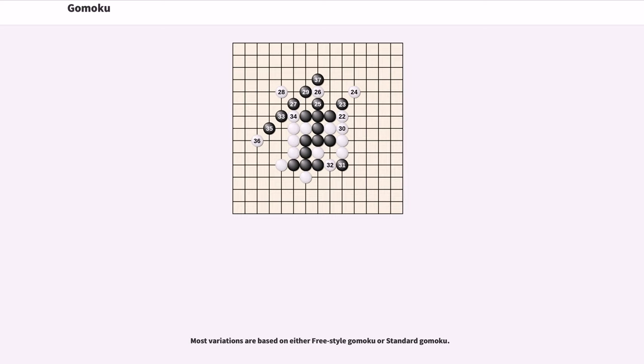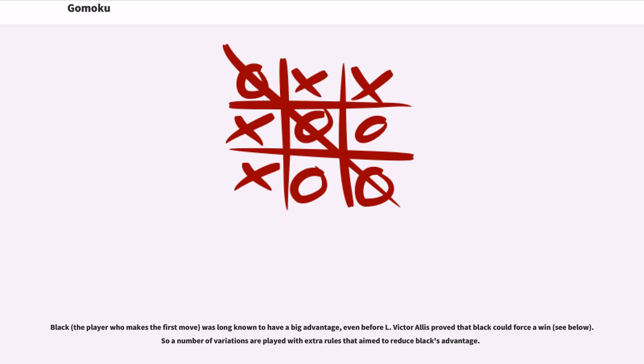Most variations are based on either freestyle Gomoku or standard Gomoku. Black, the player who makes the first move, was long known to have a big advantage, even before L. Victor Alice proved that black could force a win. So a number of variations are played with extra rules that aim to reduce black's advantage.